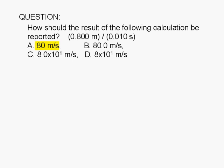Should it be reported as 80 meters per second, 80.0 meters per second, 8.0 times 10 to the 1 meters per second, or 8 times 10 to the 1 meters per second?